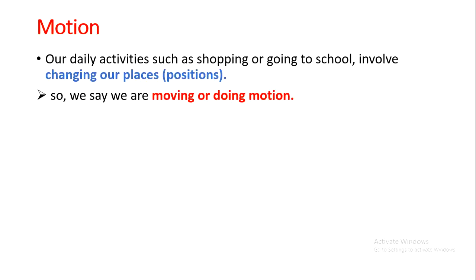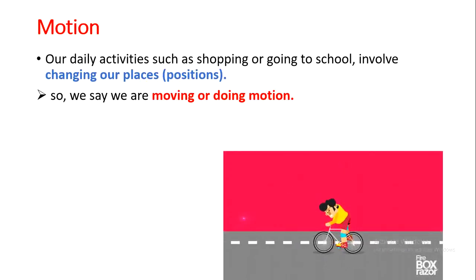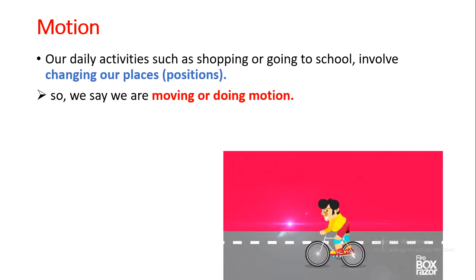So what is motion? When I change my position, I am doing motion. When I go to the corner, I change my position, I change my place. So motion is the movement that I do when I change my position. Like we can see here, a person who is riding a bike is changing their place and position, so they are doing motion.